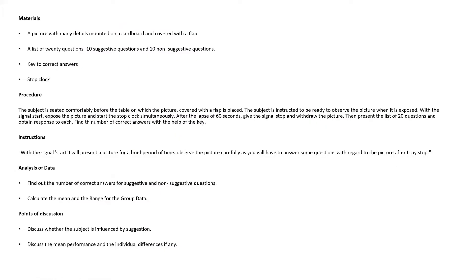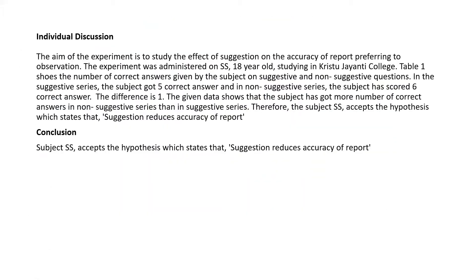Under points of discussion, the first point is to discuss whether the subject is influenced by suggestion. This is a basic format for writing a discussion in all psychology experiments. We begin by stating the aim of the experiment — which is the problem statement. Then we give a very short description of the subject: for example, 'The experiment was administered on SS, an 18-year-old studying at Crystal University College.' We do not mention the subject's full name due to confidentiality; instead, we use short initials.